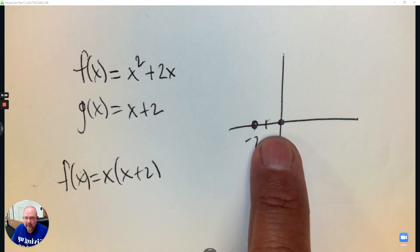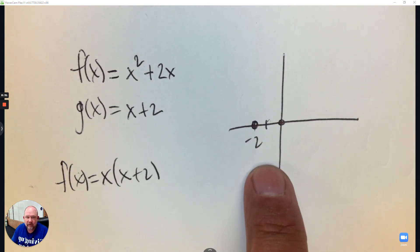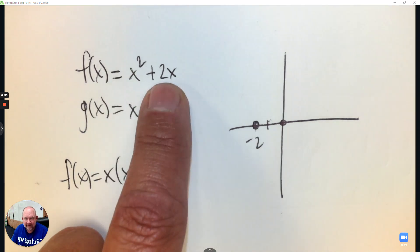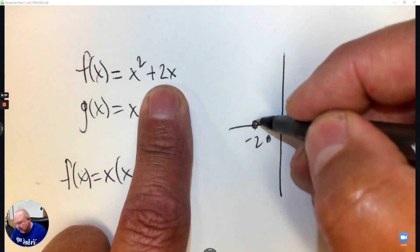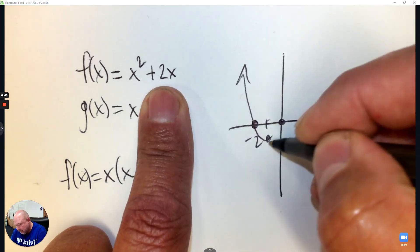I also know that the vertex is in between those points. So negative 1 is the vertex. And if I plug in negative 1, I get the answer negative 1. And then I have my parabola from there.